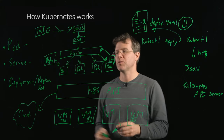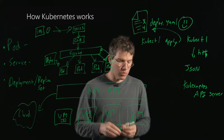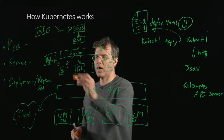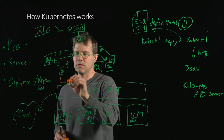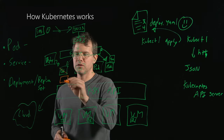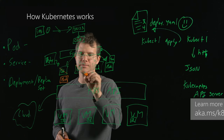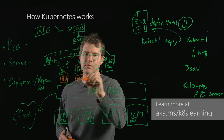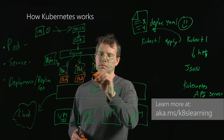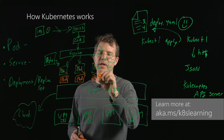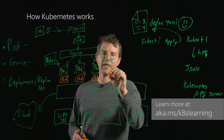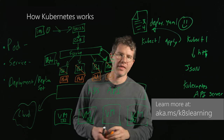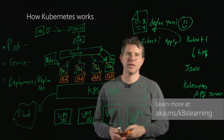You can actually do a rolling deployment where you move from version one of your container to version two of your container in place without your end user noticing at all. We'll talk more about how that works in the next episode.